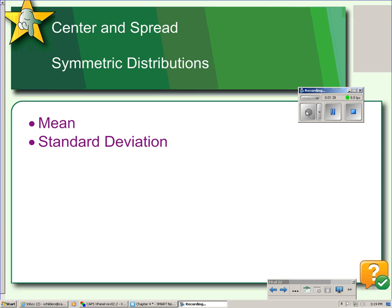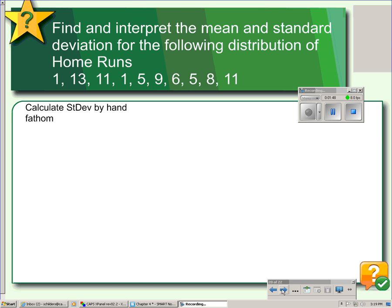Another way to measure the spread of distribution is to estimate the average deviation from the mean. This quantity is called the standard deviation. We will take this data set about home runs hit by a particular team, and we will calculate the mean and the standard deviation.